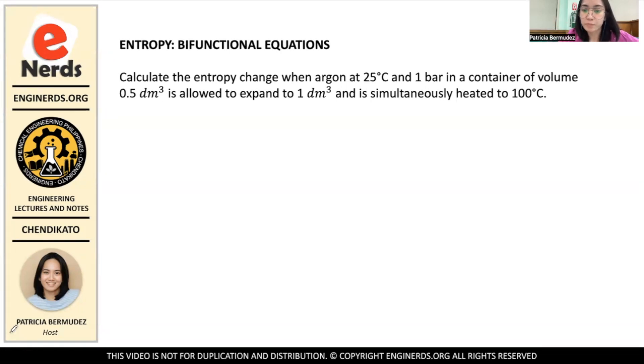Like for example, entropy is actually a function of pressure, volume, and temperature. But let's say the temperature is constant, but the pressure and volume are varying, then the change in entropy will be in terms of the change in pressure and volume. So that's the idea behind bifunctional equations.